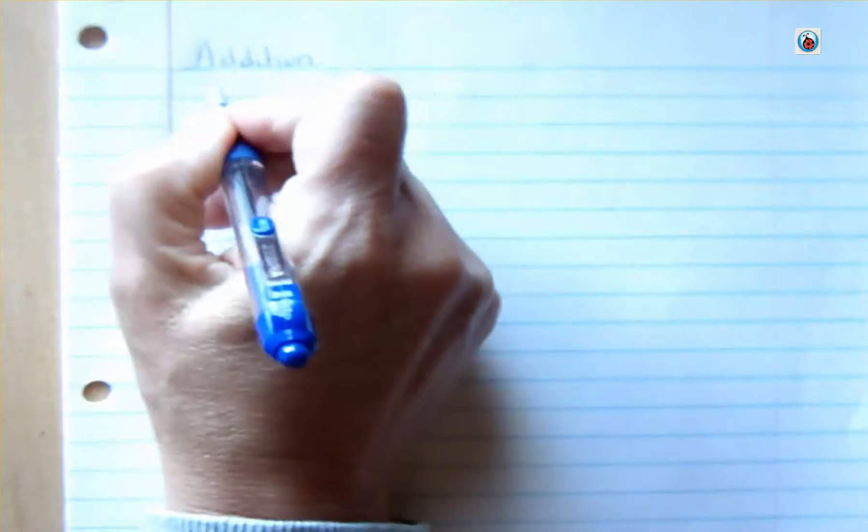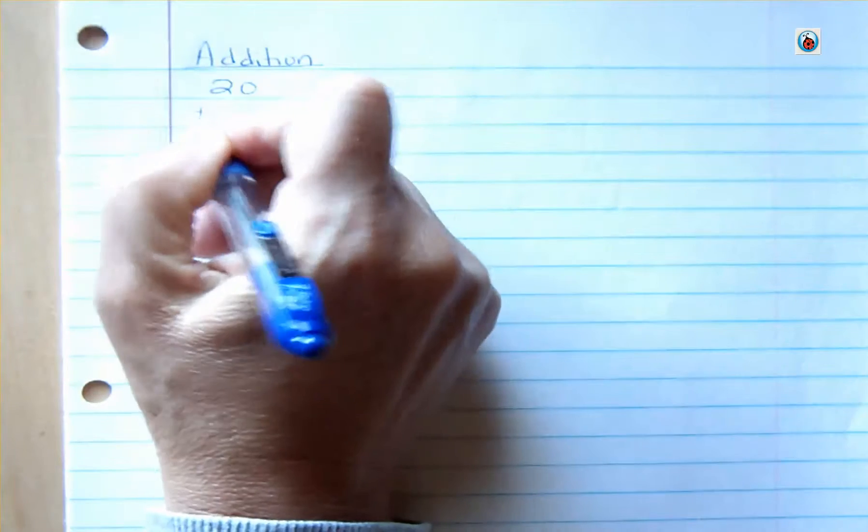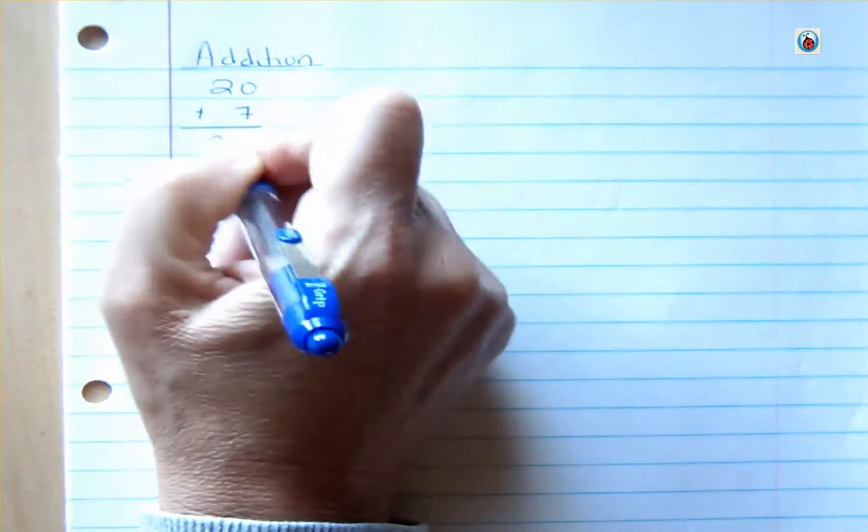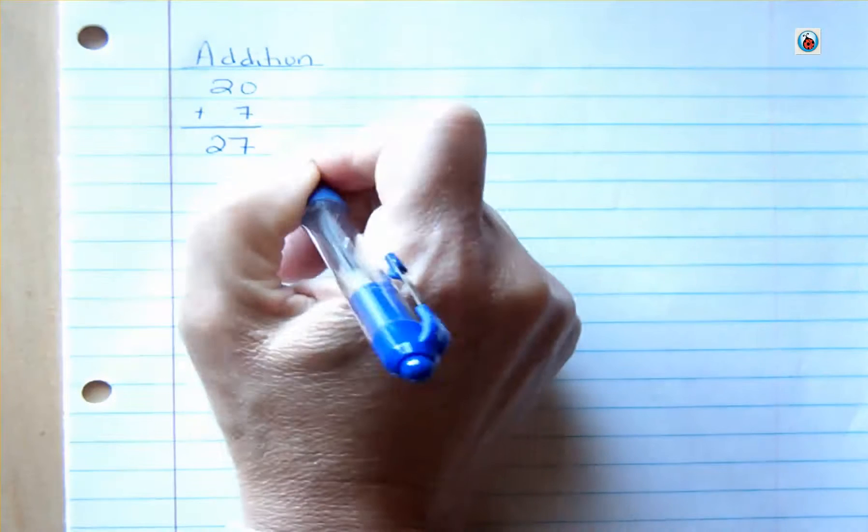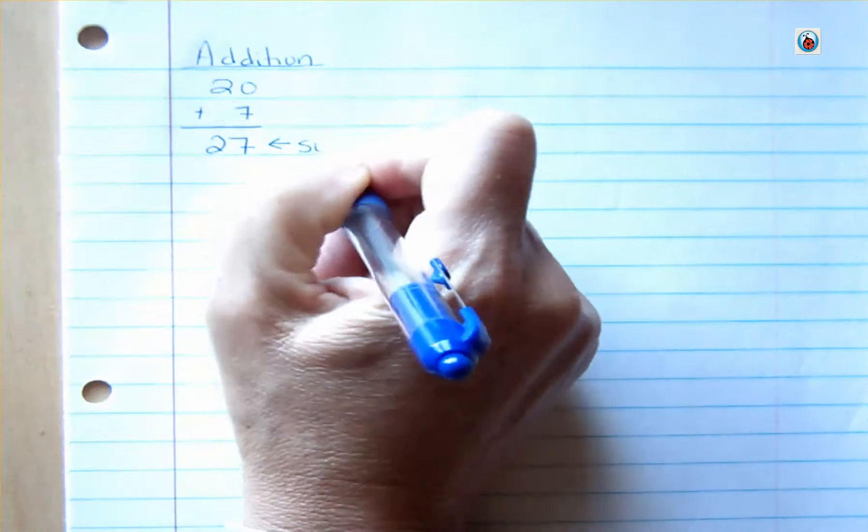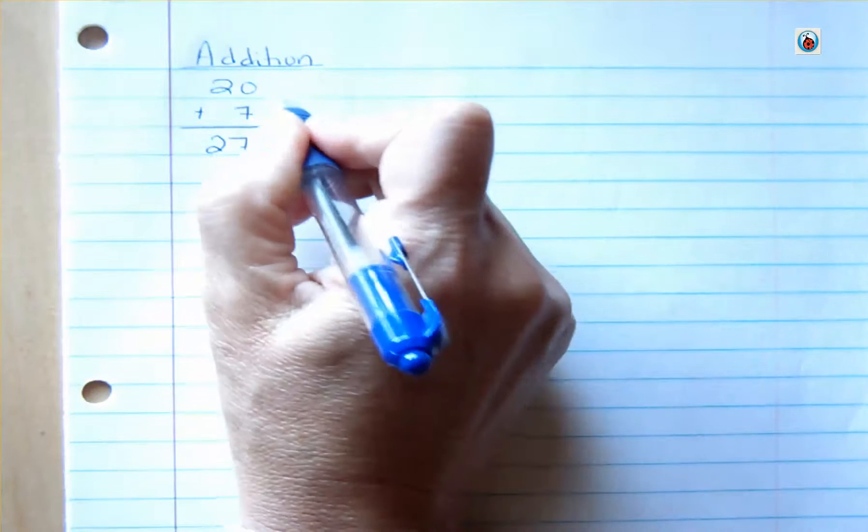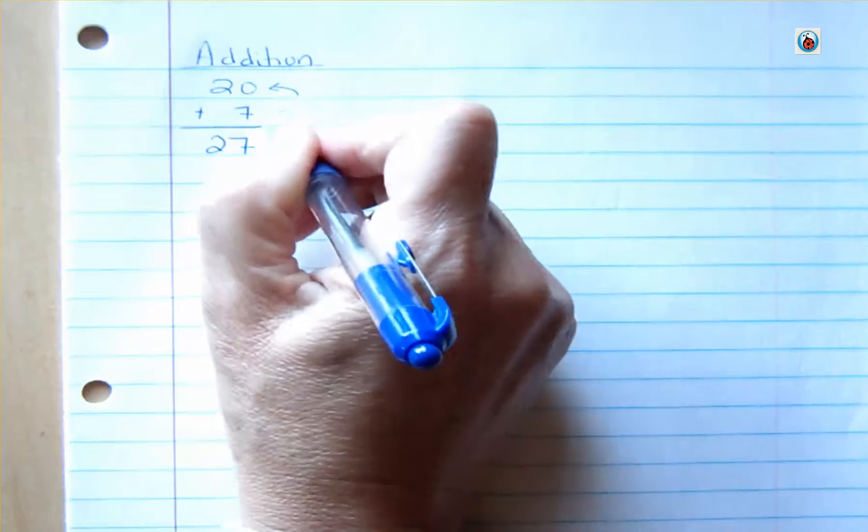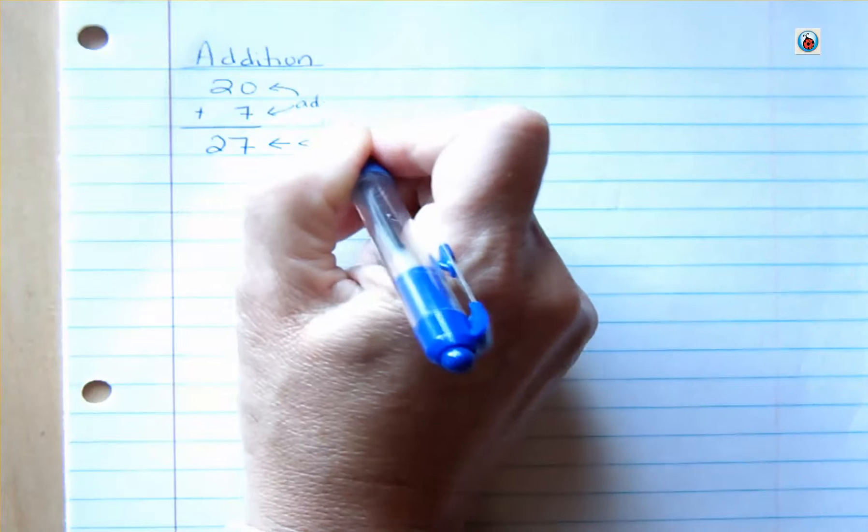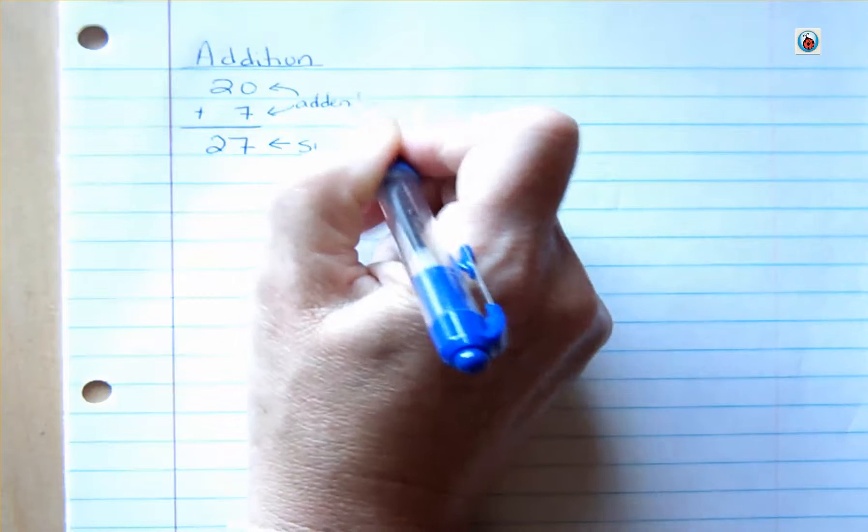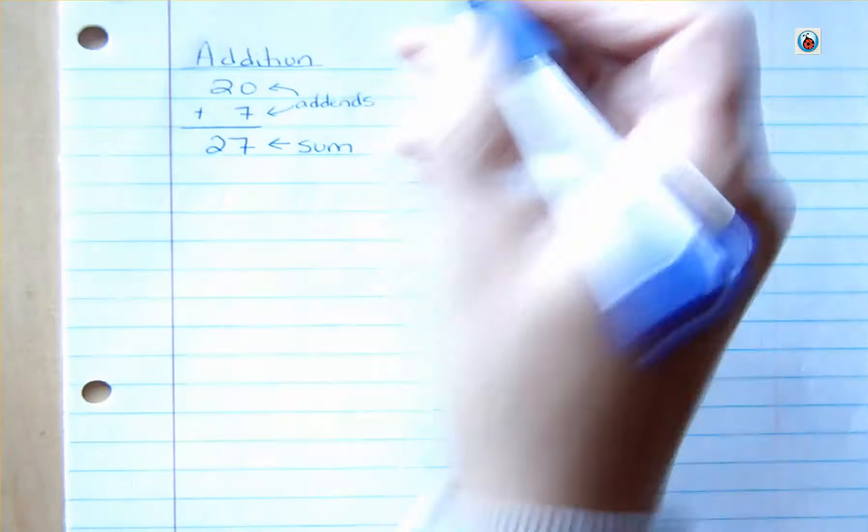When you talk about addition, you're talking about, maybe zoom in a little bit on that, something like 20 plus 7 is 27. The answer to an addition problem is called a sum, and the two things that you're adding are addends. All right, so that's just the terminology that I want you to be familiar with.